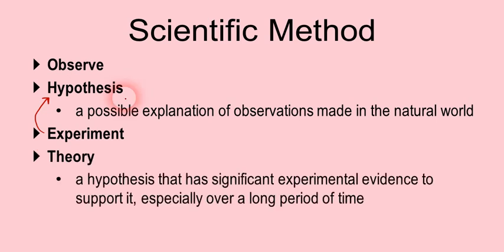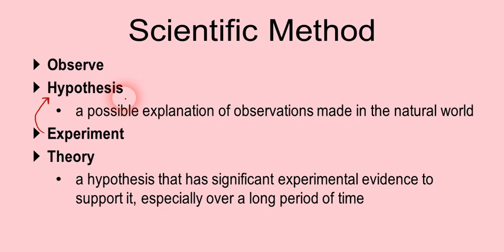Eventually, you may be able to come up with a theory. A theory is basically a hypothesis that has significant experimental evidence to support it, especially over a long period of time. Now, we have to be careful about when we say theory in science, because sometimes people say it's just a theory. Well, that's not really how it works. Most theories have significant experimental evidence backing them up.